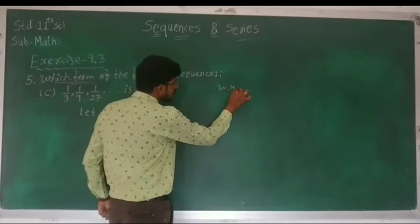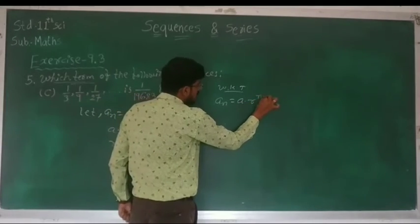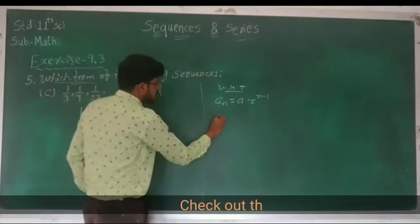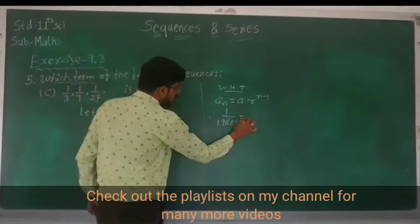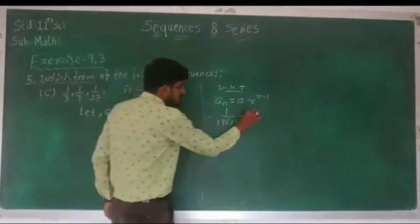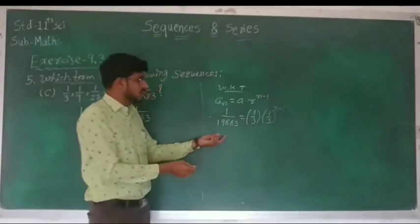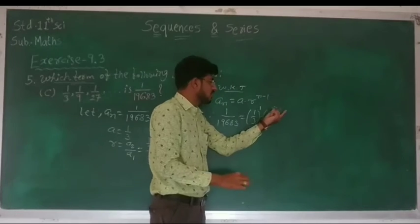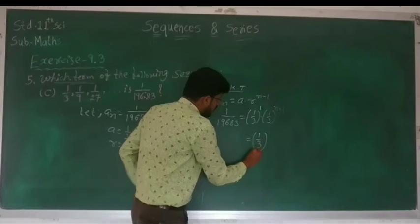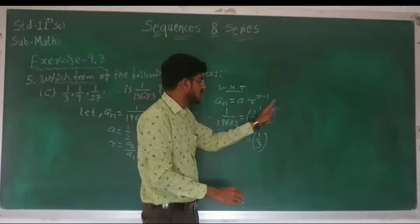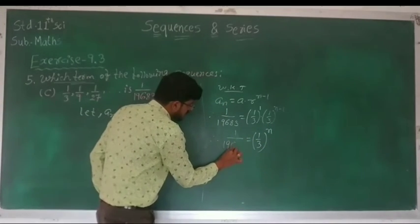We know that a_n is equal to a into r raise to n minus 1. Now suppose a_n is 1/19683, so 1/19683 is equal to first term 1/3, into 1/3 raise to n minus 1. Here 1/3 raise to 1, and 1/3 raise to 1, so adding powers gives 1/3 raise to n. Left-hand side we have 1/19683.